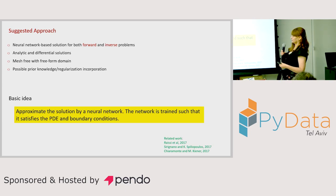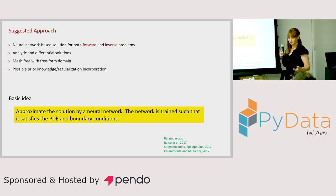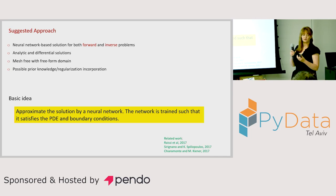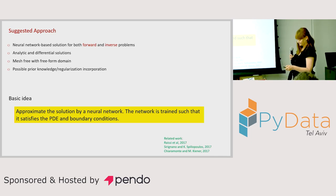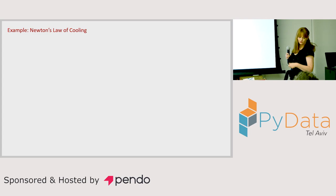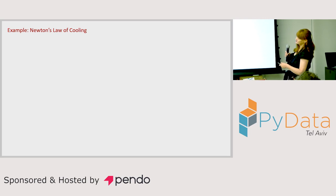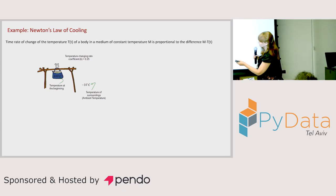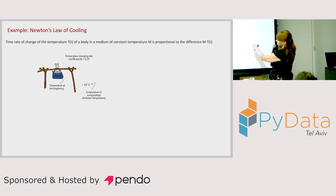The basic idea is that we approximate our solution with a neural network, and we train the network so that it satisfies the PDE and the boundary conditions. We can think of it as an unsupervised approach, because we don't need pairs of X and Y like in supervised machine learning. To explain this, I'll give a very simple example: Newton's law of cooling.